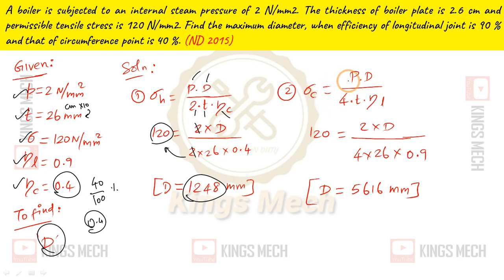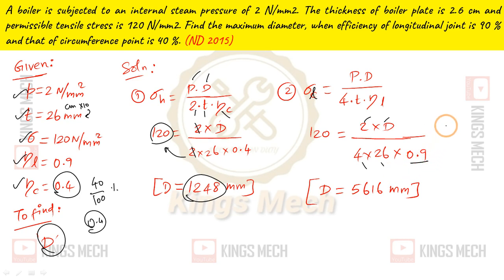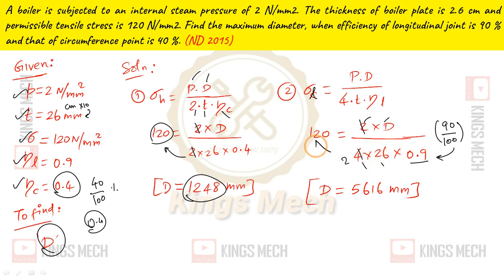Next, the longitudinal stress: sigma_L = P × D divided by (4 × T × longitudinal efficiency). The longitudinal efficiency is 90%, i.e., 0.9. Substituting: 2 × D divided by (4 × 26 × 0.9) — the 2s cancel, giving 52 × 0.9 = 46.8 — multiplied by 120, this value gives D_max = 5616 mm.